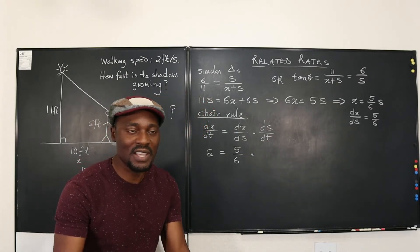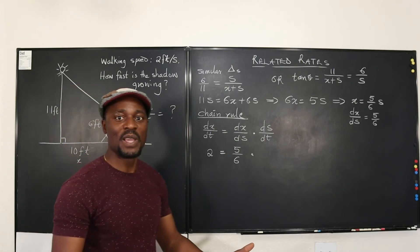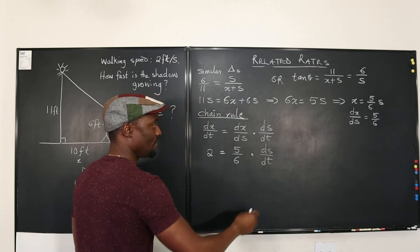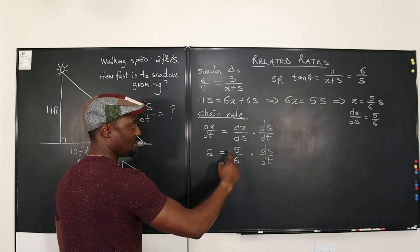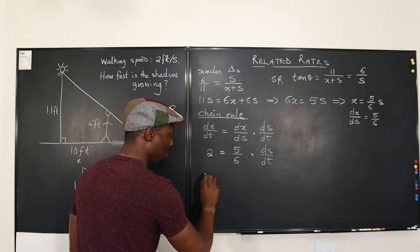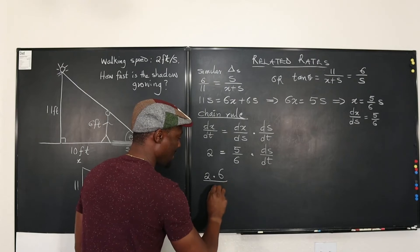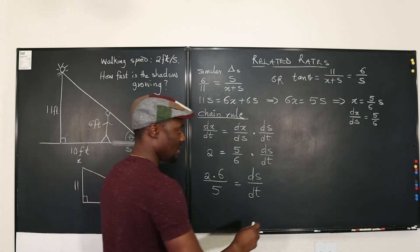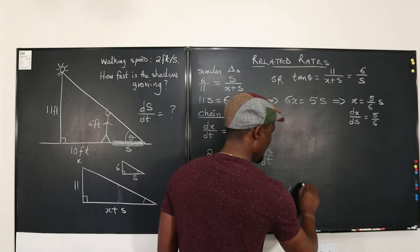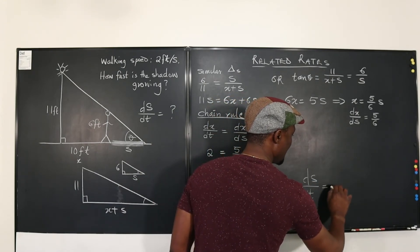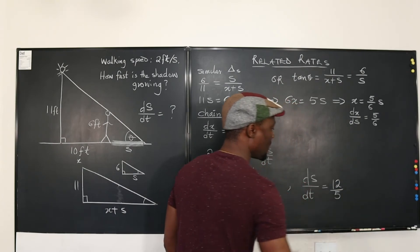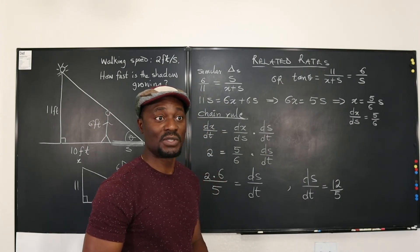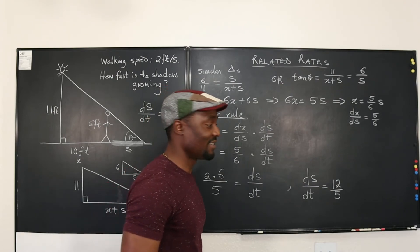What is DS/DT? That's what we're looking for. It is how fast the shadow is growing. We don't know yet, but now we can find it. This is DS/DT. So from here, if you isolate this, if you multiply both sides by 6 and divide by 5, you're going to have 2 times 6 divided by 5 will be equal to DS/DT. And what does that give you? 12 over 5. So DS/DT equals 12 over 5, which is 2.4, 2.4 feet per second. The shadow is growing longer than the guy is walking.